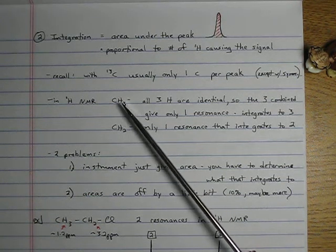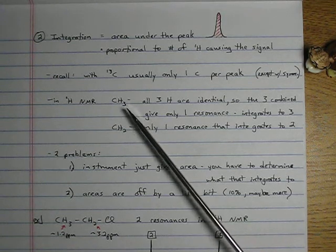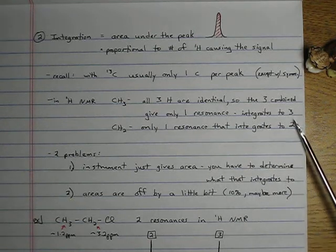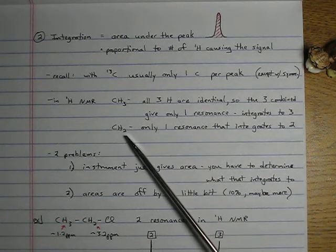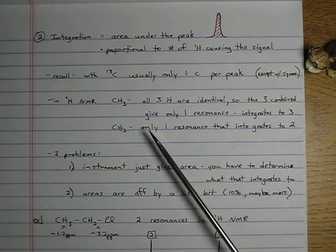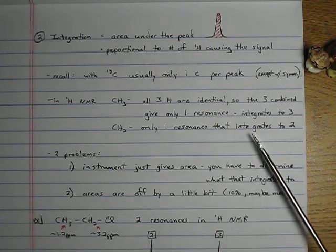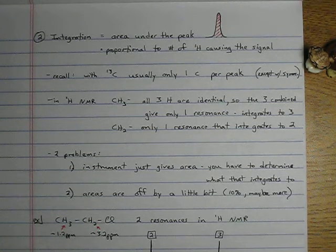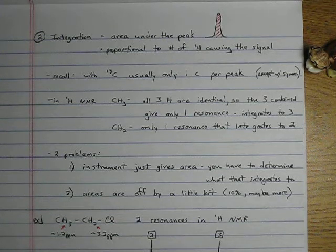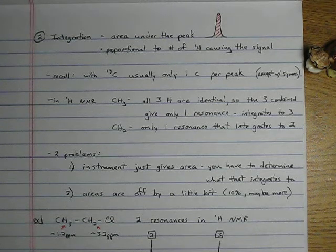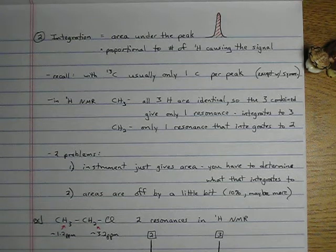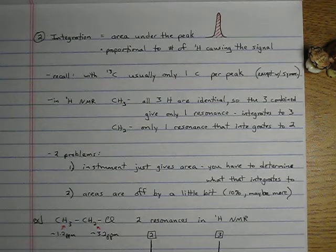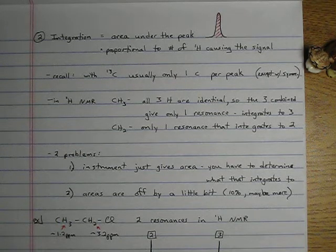The thing is, with integration, if you have three protons of a methyl group, they only give one resonance. However, the area under that peak will integrate to three. CH2s only give one resonance, but since there's two hydrogens causing the signal, that will integrate to two. So integration is very important because you integrate the peak, that will tell you it integrates to three, that's probably a CH2 group. It helps us determine how many hydrogens are on each carbon.